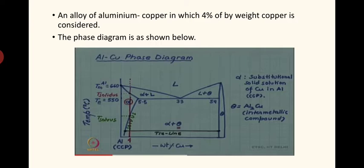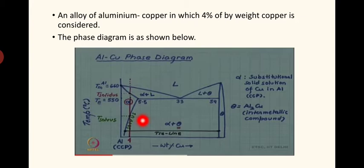The theta phase component that precipitates out obstructs dislocation motion, imparting hardness. With slow cooling, theta phase also precipitates out, so we might expect hardness — but it does not happen. The reason is that with slow cooling the copper content by weight at the end of equilibrium is only 0.02%, whereas with quenching the copper content by weight is 4%. Much more copper is available to precipitate out as theta, giving more obstruction. If more copper is available, more theta precipitate is formed, meaning more obstruction to dislocation motion.